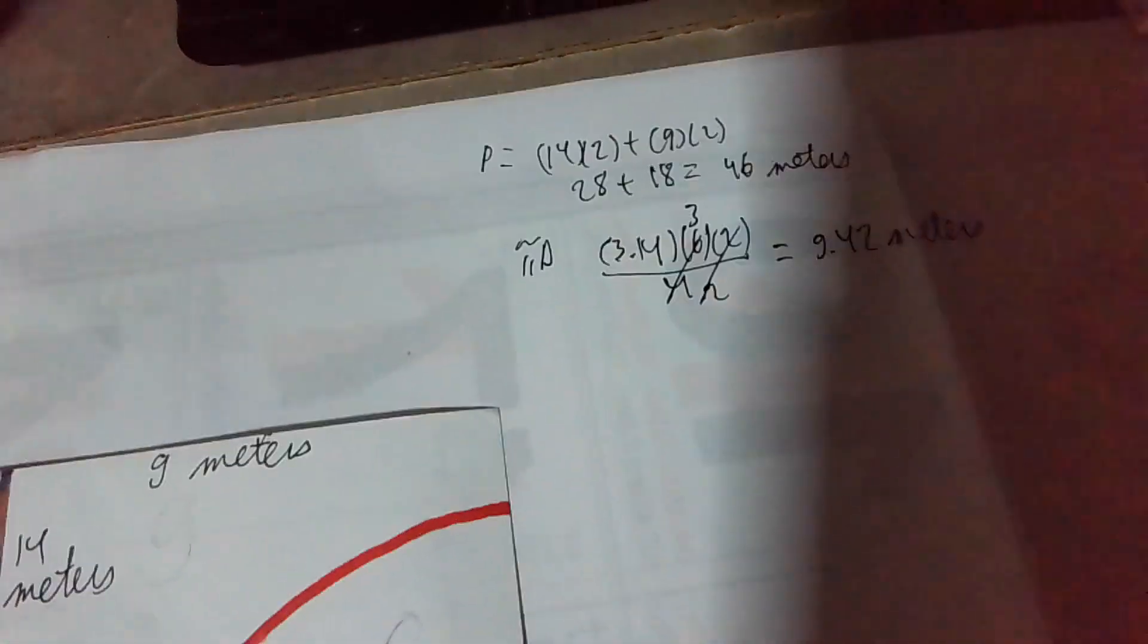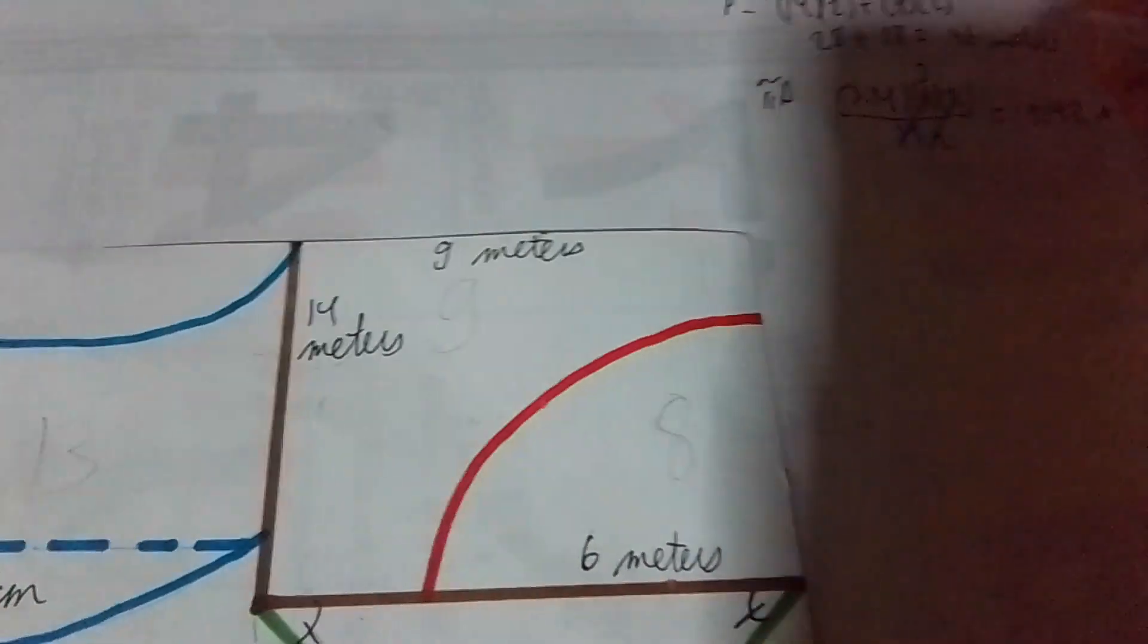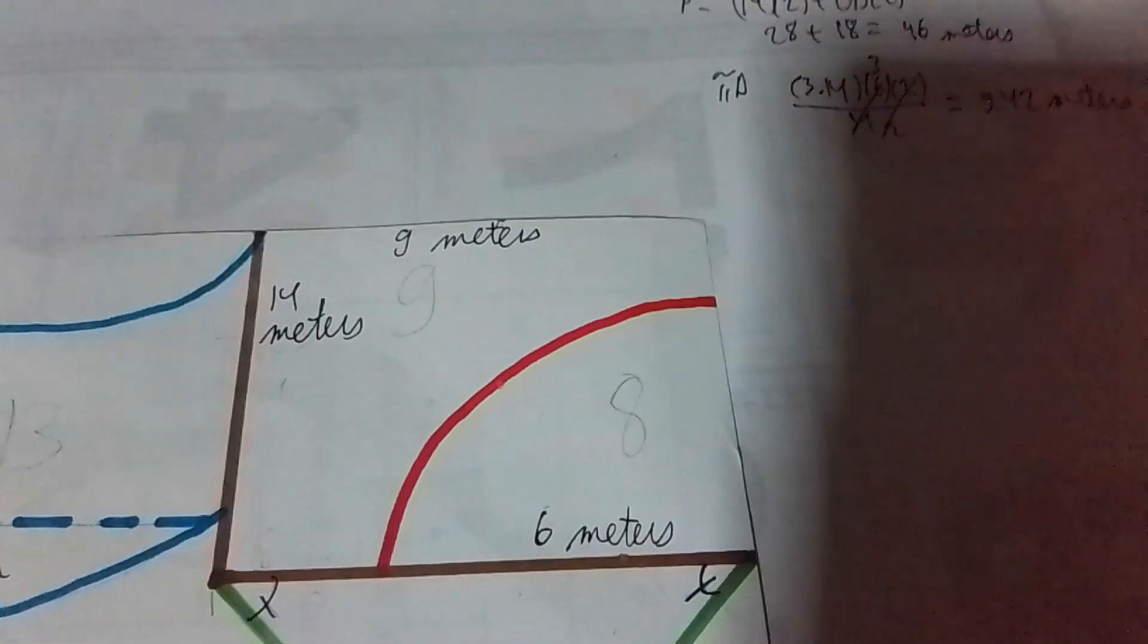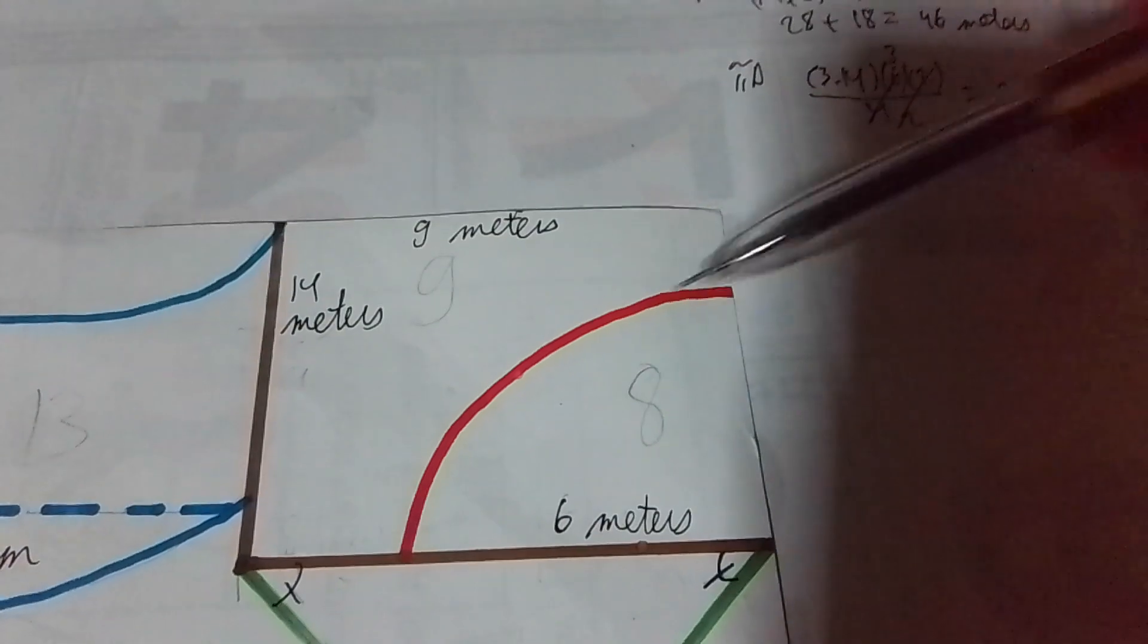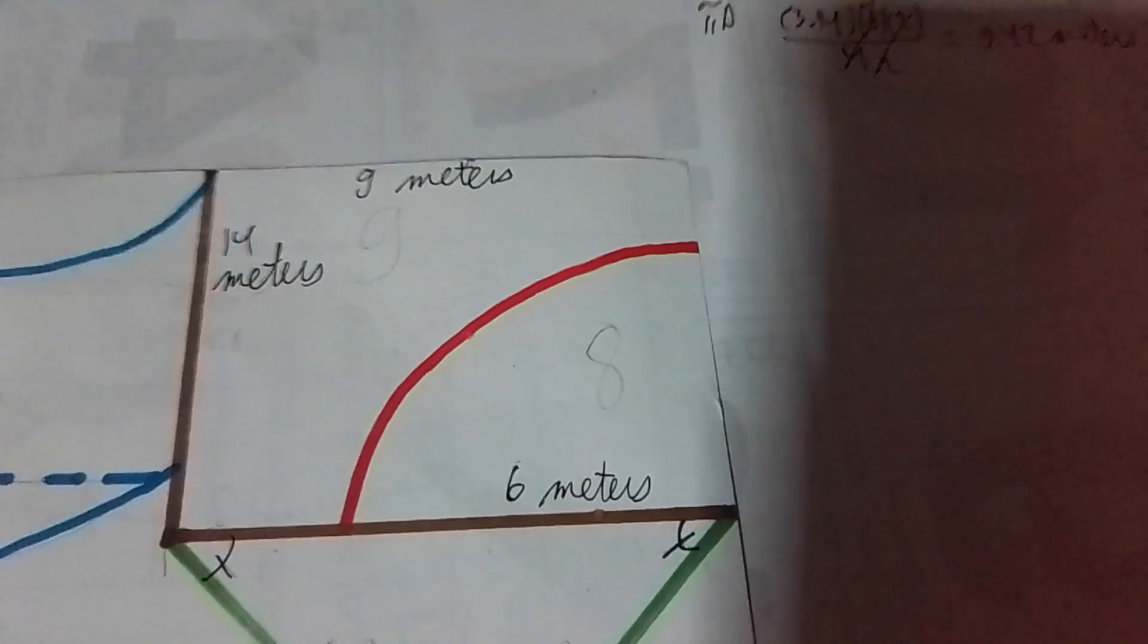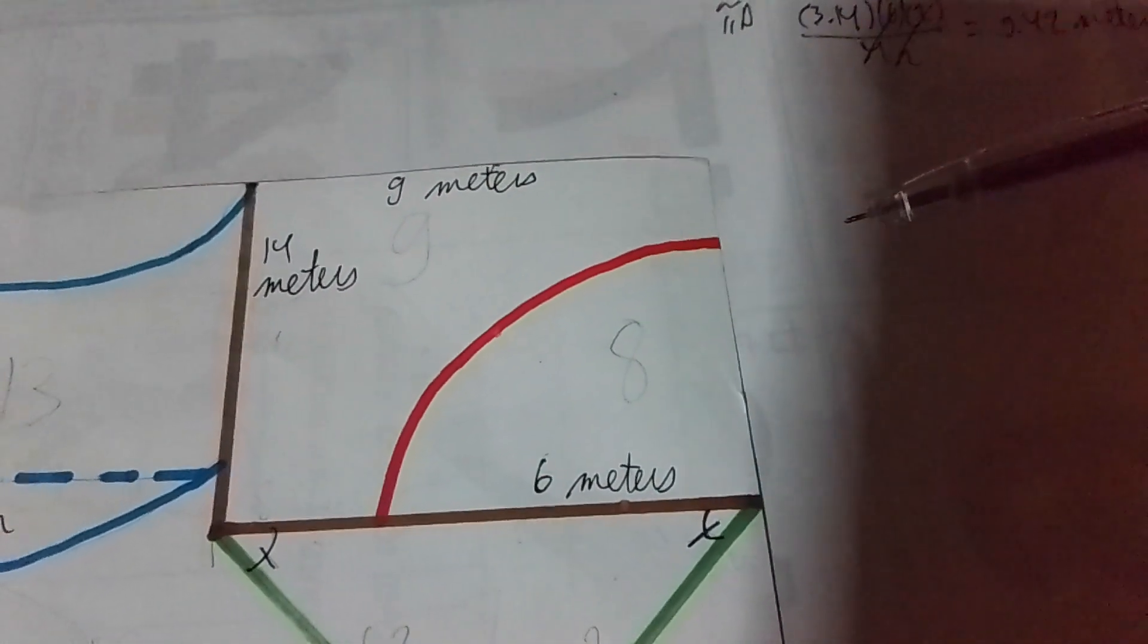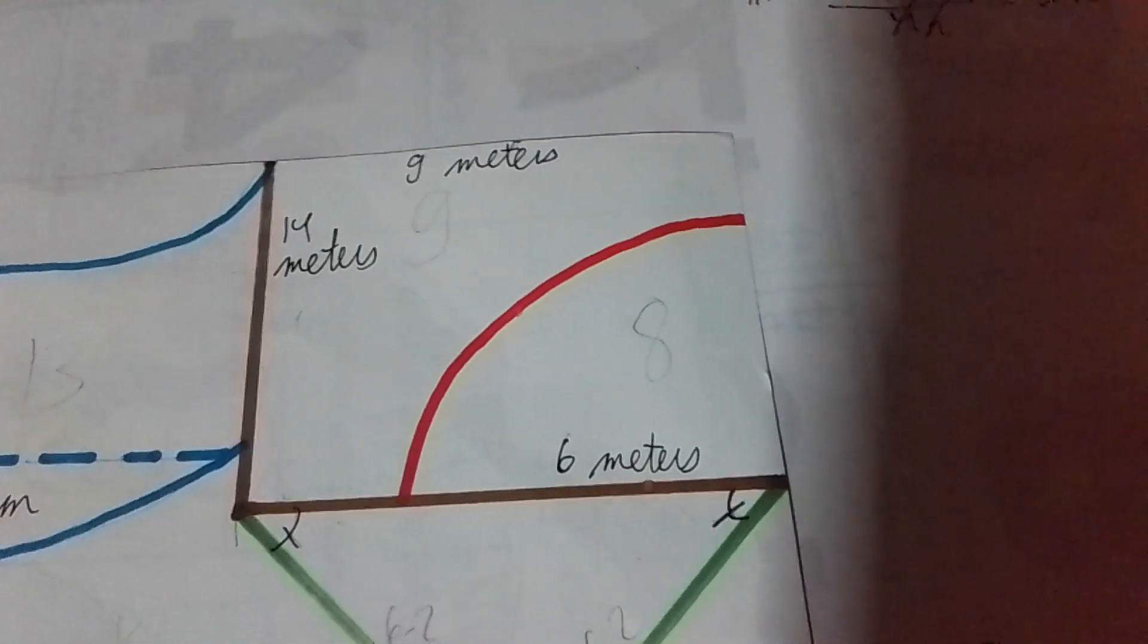We're still not yet done. Remember that 9.42 pertains to the curve part. But we want to get this guy and this guy. If you're just going along the curve part, we forgot the 2 radii that we need to add up.